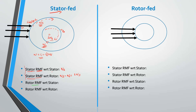Now the rotor RMF. The rotor RMF with respect to rotor is SNS. Then rotor RMF with respect to stator — from a stationary point — is SNS plus N, because the rotor is rotating at speed N. This equals NS.